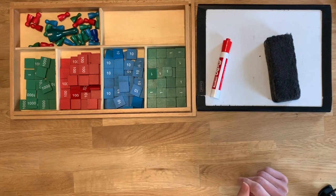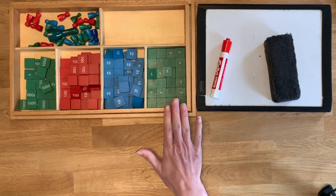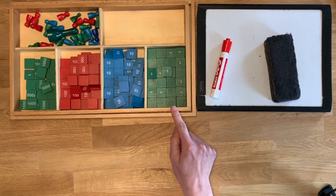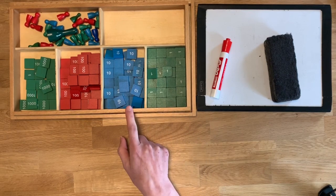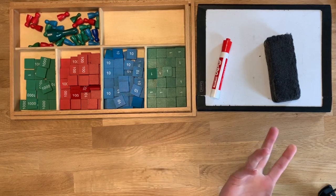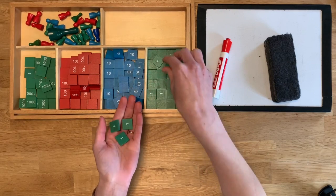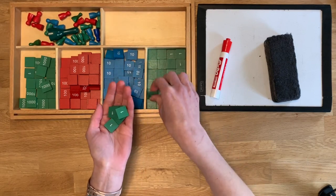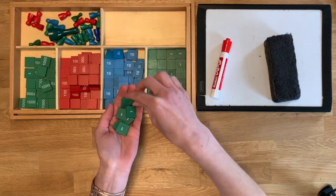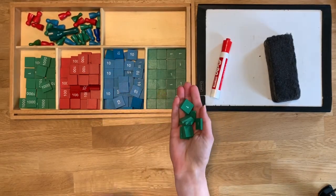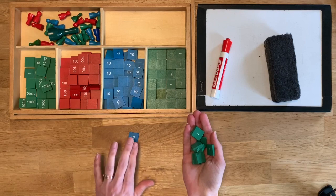So let's review really quickly. We have our units. Our units are always green and how many units equals 1 ten? Yeah 10. 10 units: 1, 2, 3, 4, 5, 6, 7, 8, 9, 10. 10 units equals 1 ten.